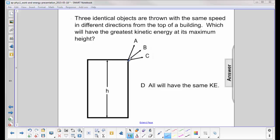We know that if we throw an object straight up, at the very top the velocity will be equal to zero, so we'll have no kinetic energy.